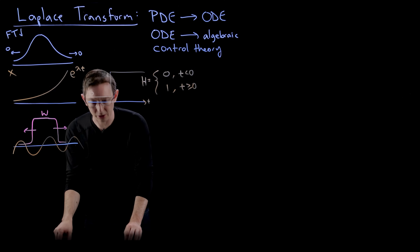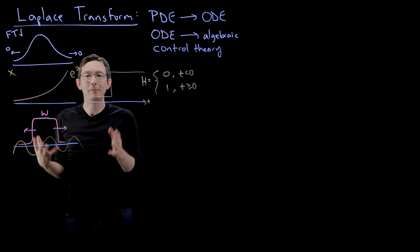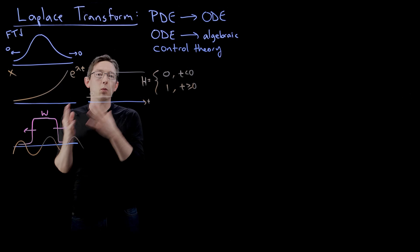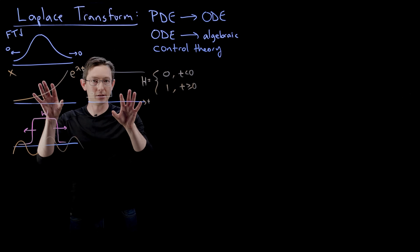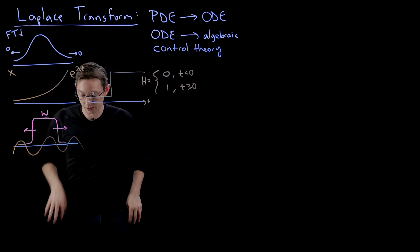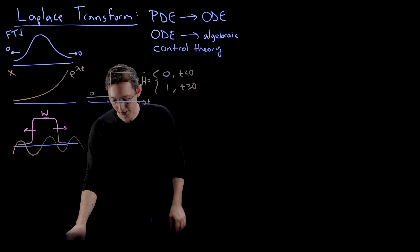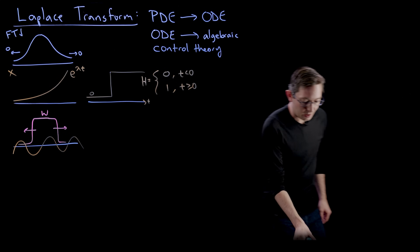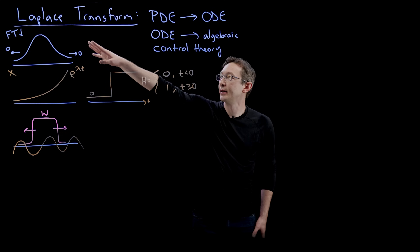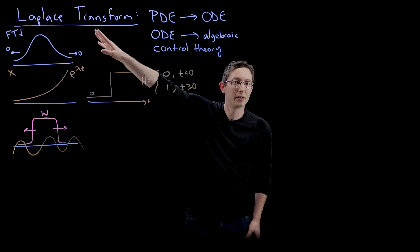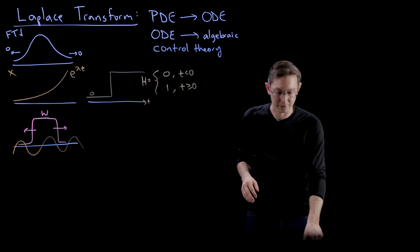What I'm going to show you is how the Laplace transform is basically a weighted, one-sided Fourier transform for these nasty functions. And this is all due to Pierre-Simon Laplace, one of the great mathematicians.